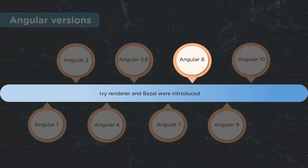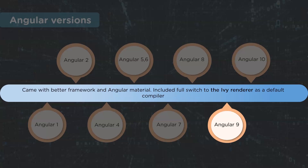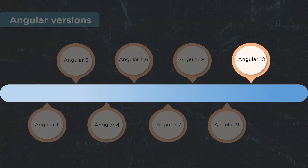Features like the Ivy renderer and Bazel were also introduced. Angular 9 was released in February 2020 with the most awaited Ivy compiler. Its advantages included faster and better testing, better debugging, improved CSS class and style binding, improved type checking, improved build errors, improved build times, and improved internationalization. The latest version, Angular 10, was then released in June 2020.